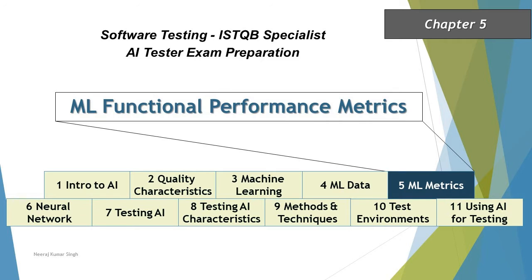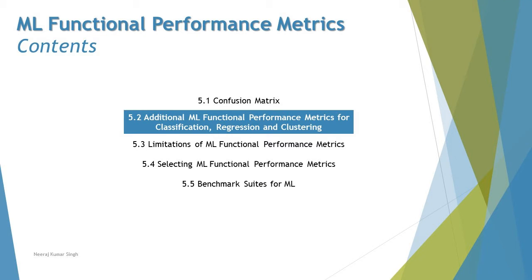Hello friends and greetings for the day! Welcome back to another tutorial on our ISTQB AI Tester certification. We are in chapter 5 talking about ML functional performance matrices, and we'll be stepping into the next segment: 5.2 — Additional ML Functional Performance Matrices for Classification, Regression, and Clustering.